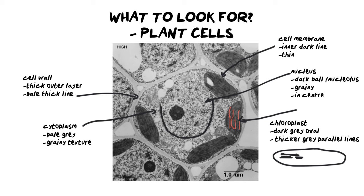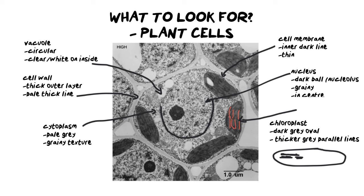Next we need to look out for the vacuoles. The vacuoles are also one of the easiest things to identify because they are these clear empty circular structures. They may not be perfectly circular — sometimes they're jelly bean shaped, sometimes they're small, sometimes they're really big — but they're always clear or white on the inside.